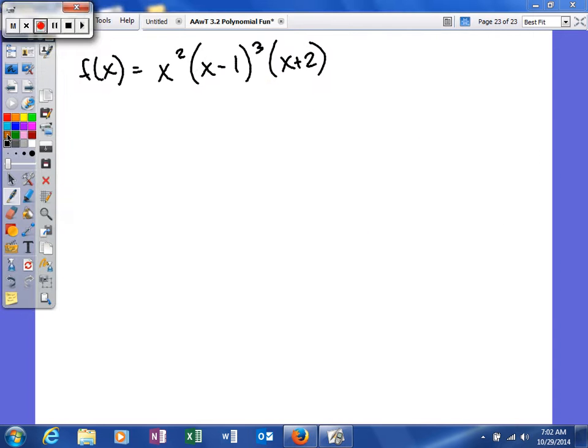Last example we're going to do for graphing polynomials. On this one, as you can see, it's a little bit different than the last two because this one's in factored form. That does make some things a little bit different. It makes some things easier and it makes some things harder. It probably makes it harder to find the degree because you can't just look and see what the degree is. You have to actually calculate it.